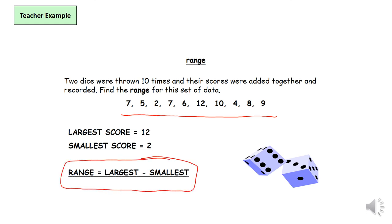So at the bottom you'll see the range is the largest value take away the smallest value. The largest value in this set of data is 12 and the smallest data is 2. So what I'm going to do is 12 take away 2 equals 10. So our range is 10.